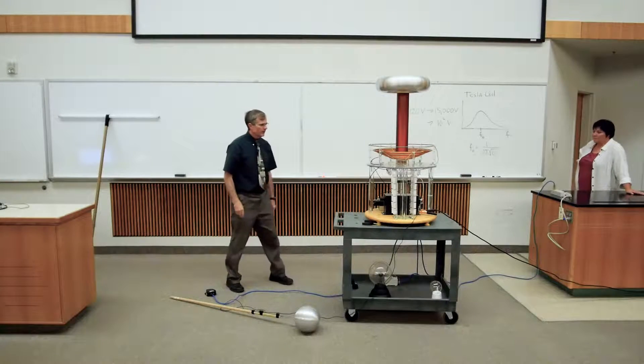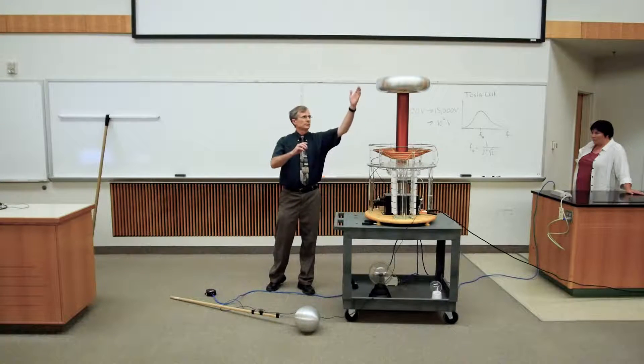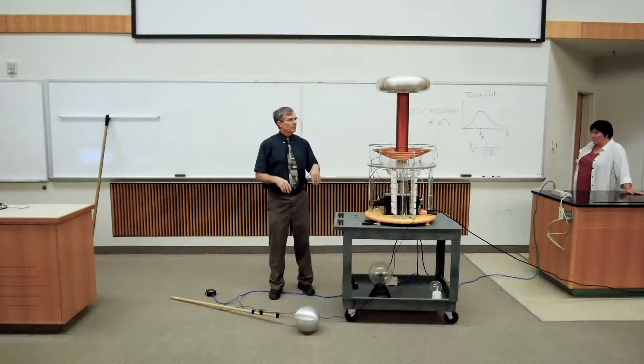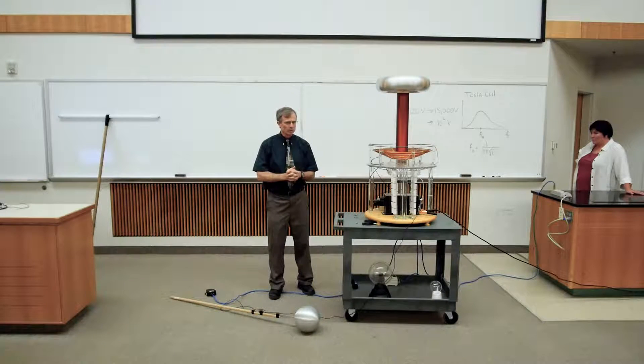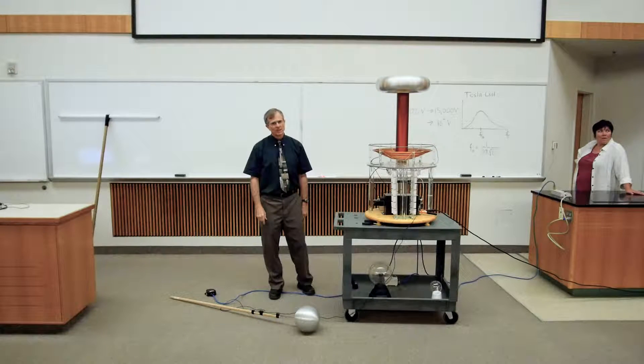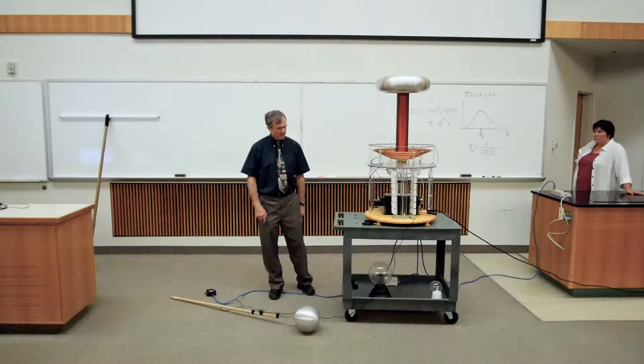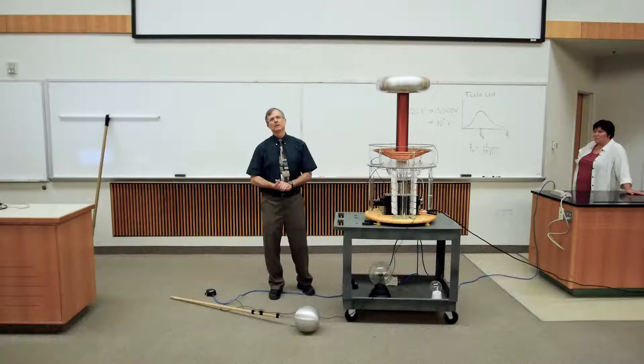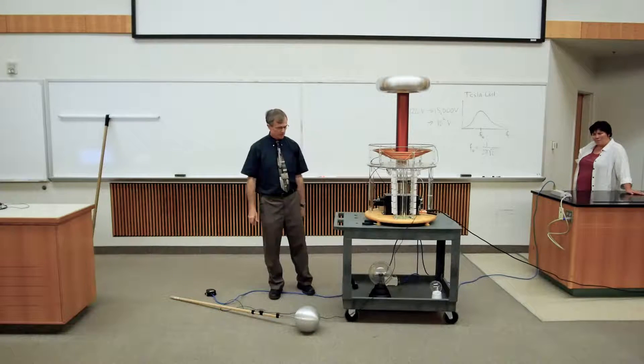There are some other toys that we can play with. If in order for you to get an arc from here to here, it's about a meter apart, you need a voltage of about 3 times 10 to the 6 volts. 3 million volts per meter is the electric field needed to get dielectric breakdown of the air in this room. So we're talking about 3 million volts or so.